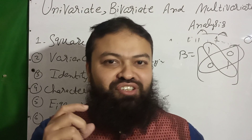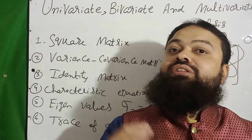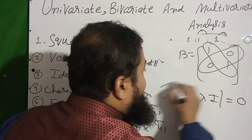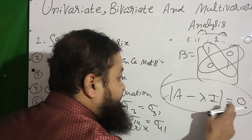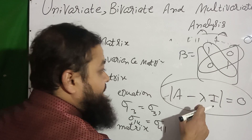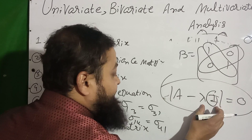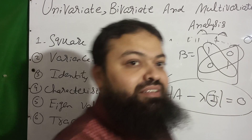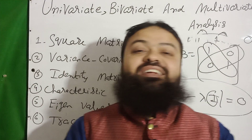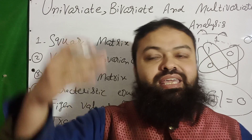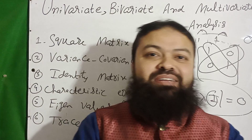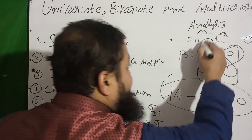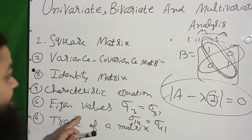Next is the characteristic equation, which is used to find eigenvalues. It is: determinant of (A minus lambda times I) equals zero. Here A is the given matrix, lambda is the unknown value, and I is the identity matrix. You multiply lambda by I, subtract from A, take the determinant, and set it equal to zero. Solving that equation gives the eigenvalues, which are the diagonal values of the given matrix.